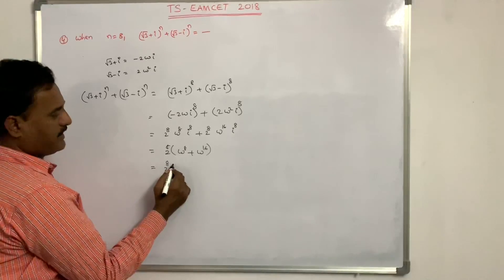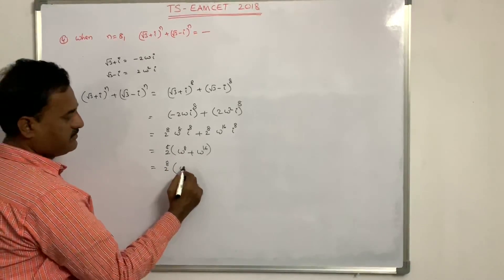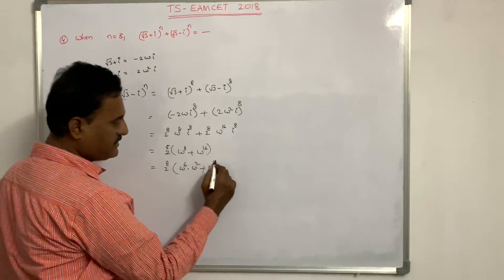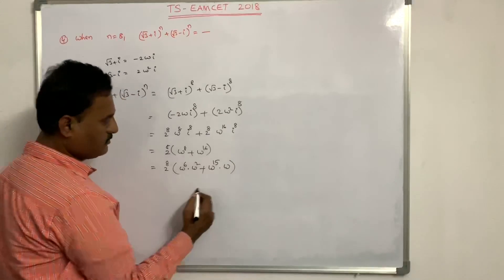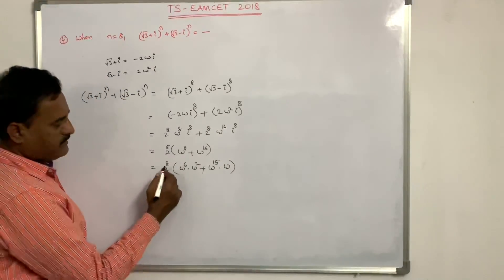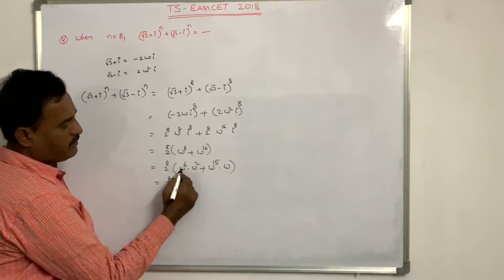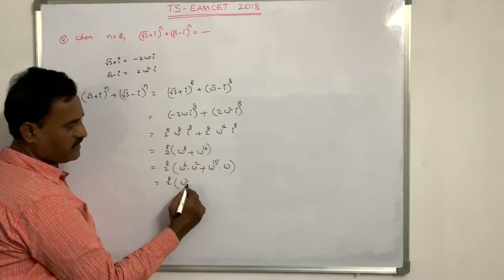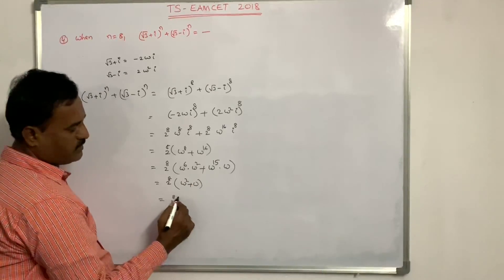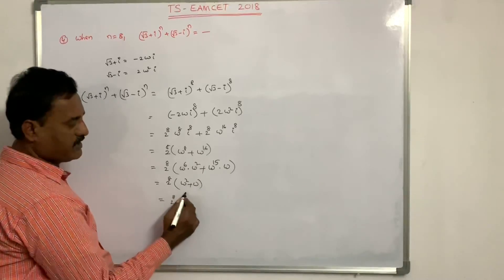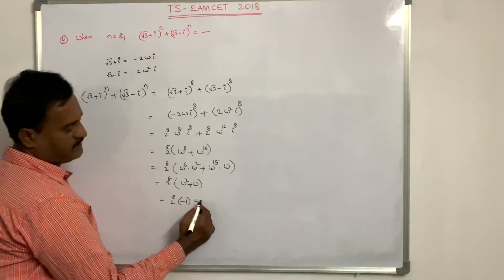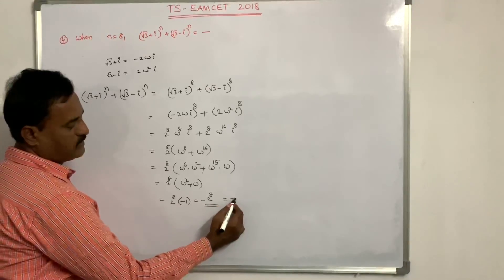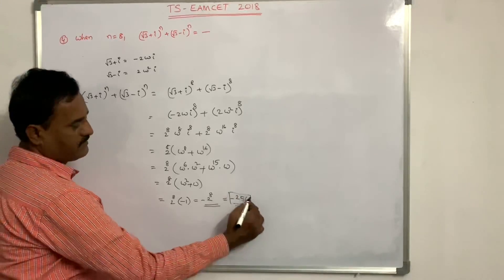Omega to the power 8 is written as omega to the power 6 times omega squared, and omega to the power 16 is written as omega to the power 15 times omega. Since omega to the power 6 equals 1 and omega to the power 15 equals 1, this becomes 2 to the power 8 times (omega squared plus omega). The value of omega squared plus omega equals minus 1, so the result is minus 2 to the power 8, which equals minus 256.